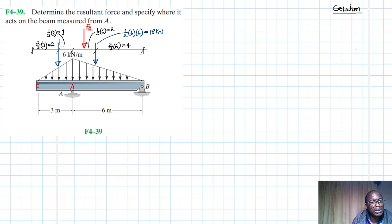And then this one is also going to be equal to half times the intensity is six, times the length three, this is going to be equal to nine kilonewtons.